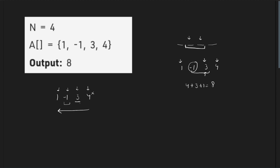Why? Because if I have not taken the previous element, I will have to take this one. This is a compulsion on me. Because if I do not take this as well, then among these two consecutive elements, none of them would be selected and that is not a valid configuration. So, if I am not taking the previous element, I will have to take the current element. This is my compulsion.